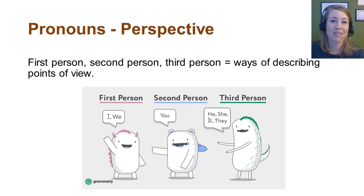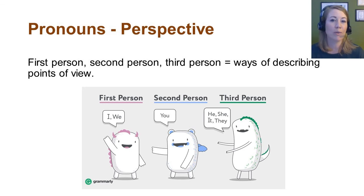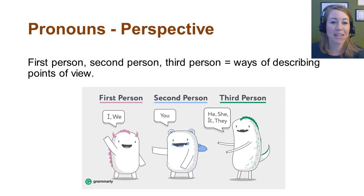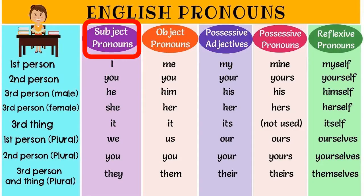Pronouns are super important to learn because they help us become effective communicators. There are lots of types of pronouns. The first we're going to look at is how first person, second person, and third person pronouns work. These pronouns are important because they're ways of describing points of view — who is the one doing the speaking? Are we referring to first person, meaning me; second person, you; or third person, he? We call these personal pronouns. They're the most common pronouns out there. They communicate person, gender, and number. These are subject, object, possessive, and reflexive pronouns, and we're going to look at all four categories one at a time.